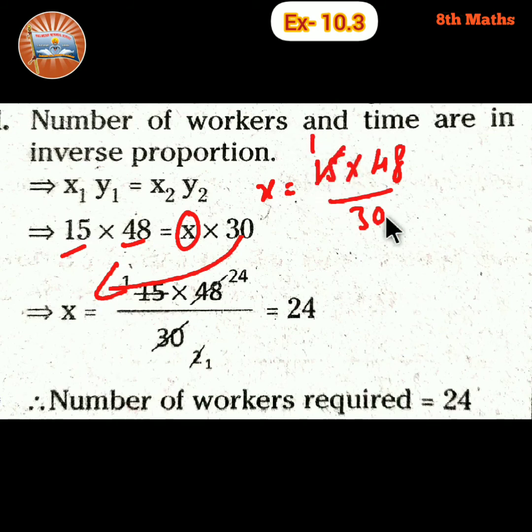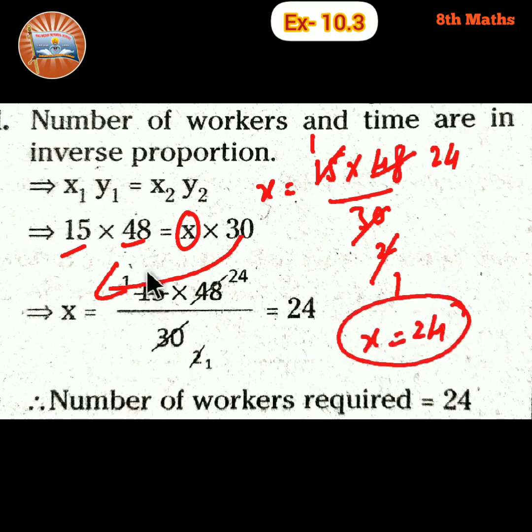So 15 ones, 15 twos, 2 ones, 2 twenty-fours. So x is equal to 24. So number of workers required is 24.